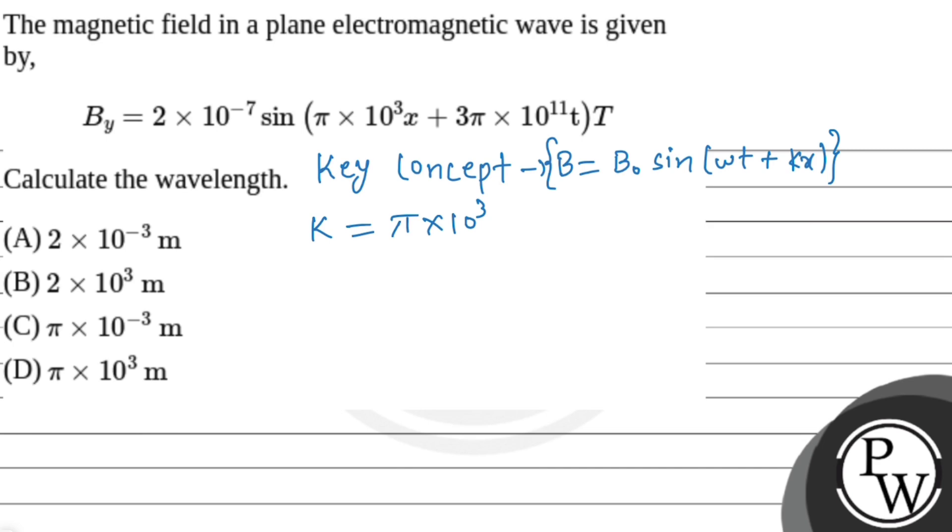If we use our equation concept, we will compare it to the given equation. K is equal to pi into 10 to the power 3, and we already know that k is equal to 2pi upon lambda.